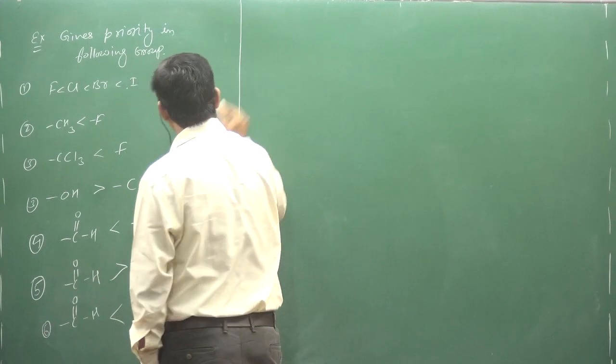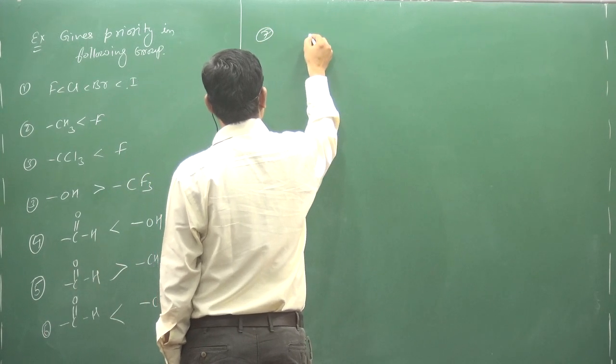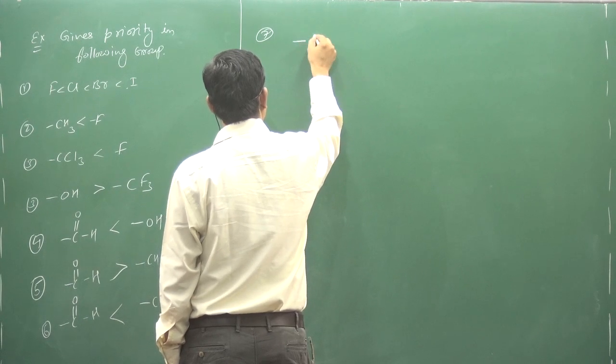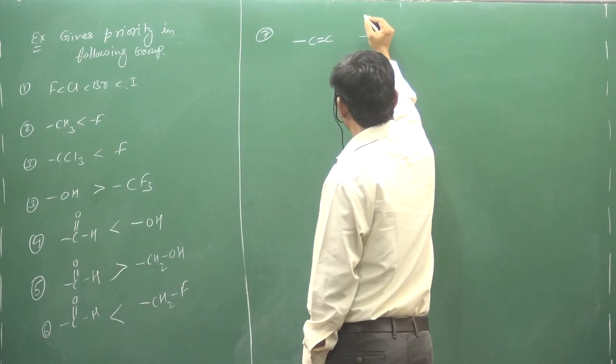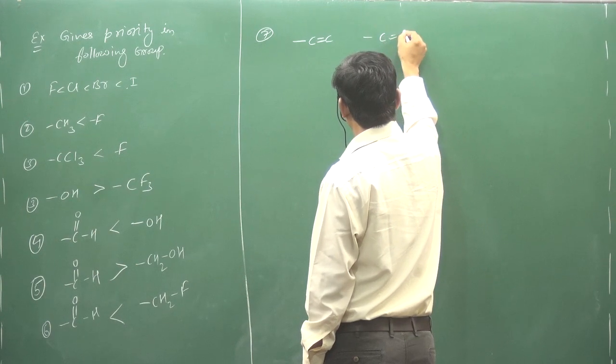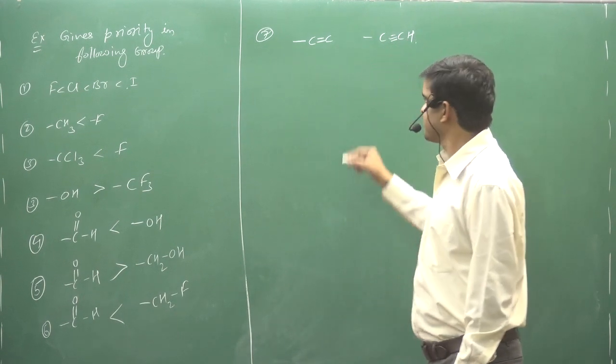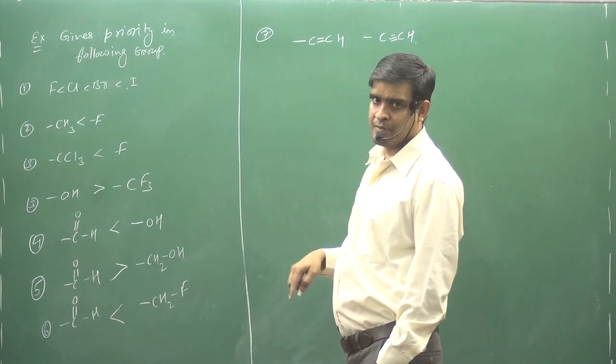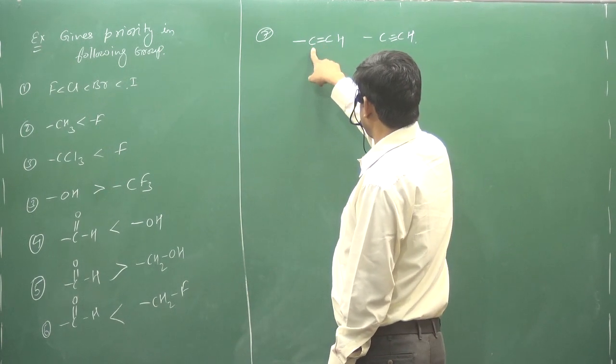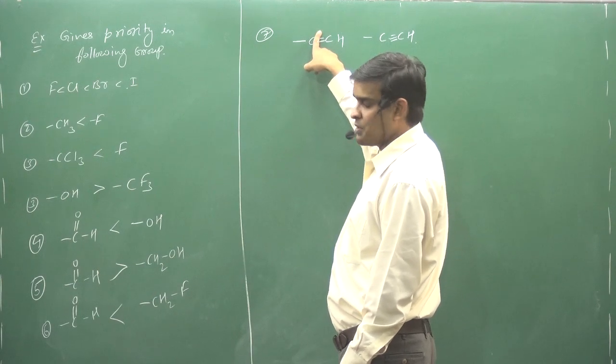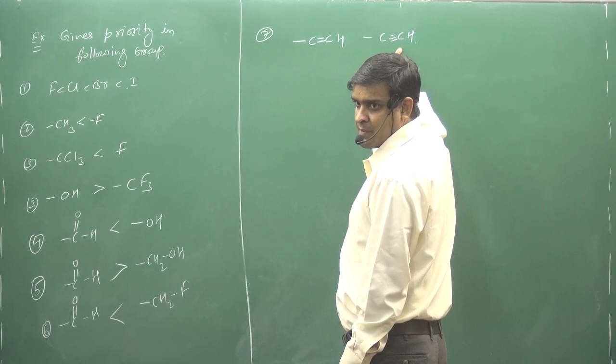6 number 7. This is not one carbon, it's two carbon. This is one carbon, it's three carbon.